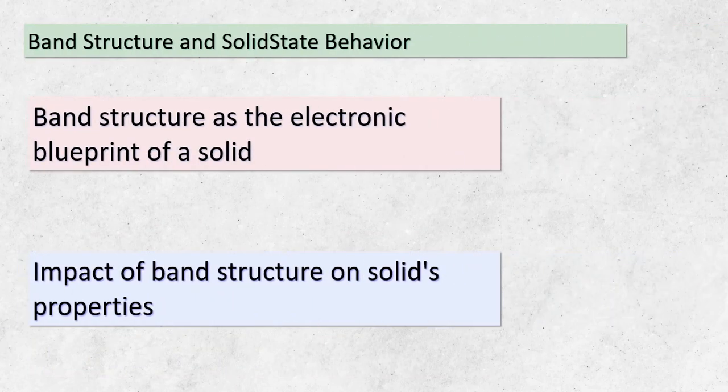We're about to uncover the secrets held within a solid's band structure. Imagine the band structure as the architectural blueprint of a solid's electronic arrangement — just as a blueprint guides the construction of a building, the band structure guides the behavior of a solid. Different types of solids exhibit different band structures, which in turn affect how they conduct electricity, reflect light, and respond to temperature changes. This concept helps us understand the distinctions between conductors, insulators, and semiconductors. The band theory provides insights into why some materials readily allow electricity to flow while others staunchly resist it. It also explains how semiconductors can be manipulated to become conductive or insulating under certain conditions.